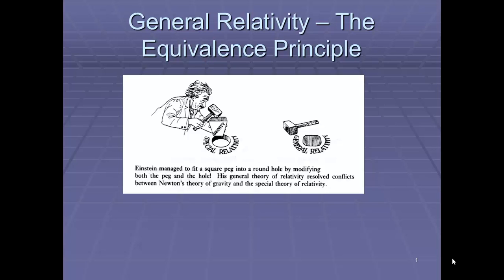Einstein recognized that there were some areas of conflict between Newton's theory of gravity and his own special theory of relativity. He needed to find a fix. The analogy here is Einstein managed to fit a square peg into a round hole by both modifying the peg and the hole. He really looked at the universe in a completely different way, and this session is all about trying to help you understand how his ideas came to light to do with general relativity.